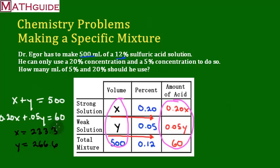And I rounded these to the nearest tenth. And I know that my volume is in milliliters, so we're talking milliliters still. And remember that the 233 is x. That represents the 20%. So I know I'm going to use 233.3 milliliters of the 20% solution. I'm going to use 266.6 milliliters of the weak solution, which is the 5%.